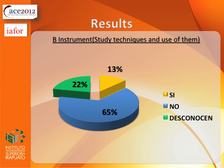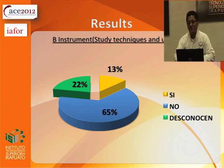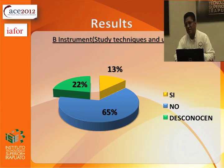Checking the B instrument, which is based on study techniques and how to use them: 30% of students have study techniques and know how to use them, with very good results. But 65% may have study techniques but don't exactly know how to use them or get the best from them. Additionally, 22% don't even have study techniques and don't know how to use them — they are very lost, which will produce very bad results for the institution.